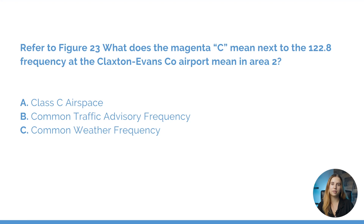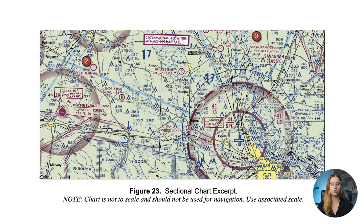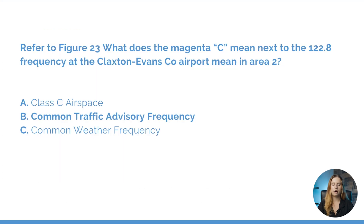Let's get into some questions you might see on the Part 107 written test regarding traffic pattern operations. This question asks: referring to figure 23, what does the magenta C next to the 122.8 frequency at Claxton Evans County Airport mean in area 2? What we're looking for is the magenta C next to frequency 122.8. Our answer is B — the common traffic advisory frequency. The magenta C, or blue depending on the airport, is always going to follow the CTAF frequency, which in this example is 122.8.